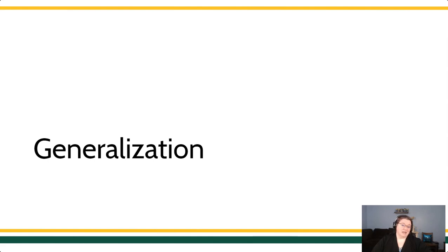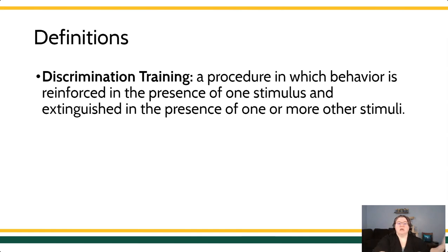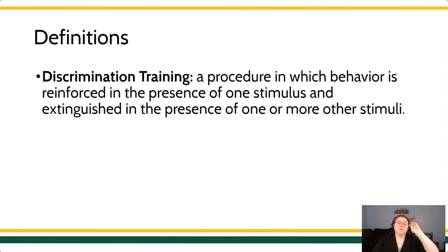When we're trying to figure out what generalization is, we need to know what generalization isn't. So let's return to some of our previous content. Remember that discrimination training is all about narrowing the range of stimuli that a person will respond to. The formal definition of discrimination training: it's a procedure in which behavior is reinforced in the presence of one stimulus and extinguished in the presence of many other stimuli. In other words, we're teaching people where, when, and with whom to emit the response, and that behavior will only be reinforced in a very narrow range of circumstances.